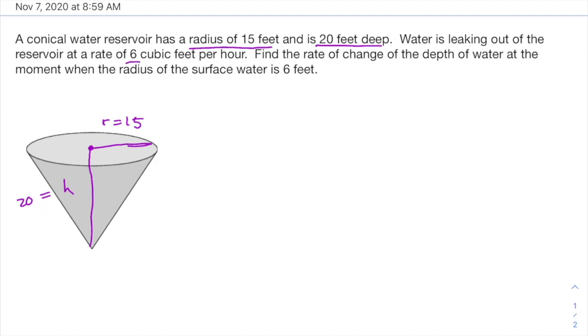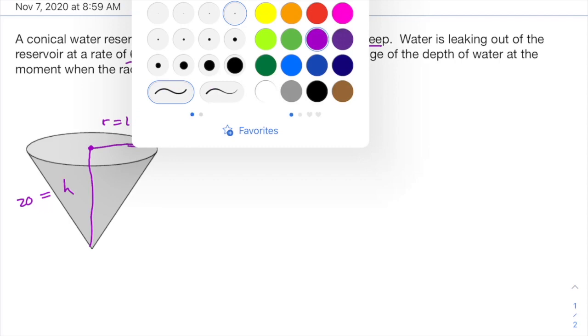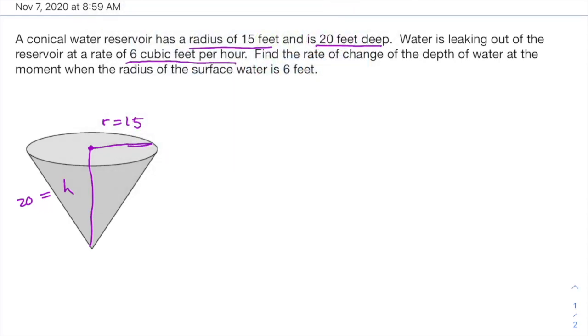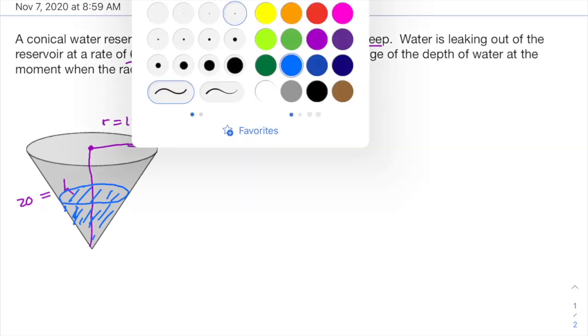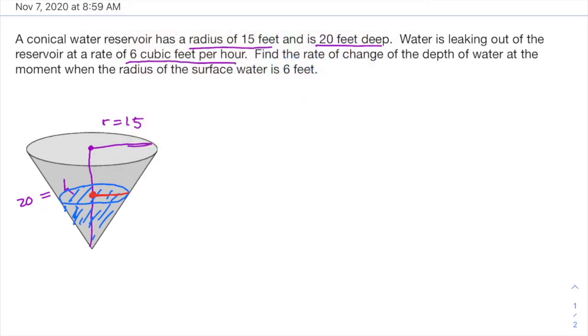And water is leaking out at a rate of six cubic feet per hour. So the cone itself, the volume isn't changing, but it's got water in it. And so at any given moment, there's a small cone of water on the inside here. And that cone of water has a radius and a height of its own. And that radius and that height, those are changing since the water is leaking out.